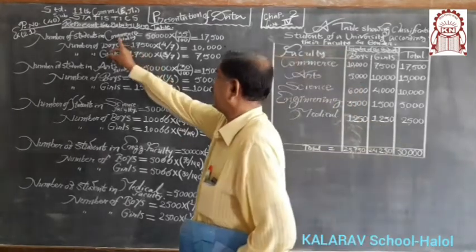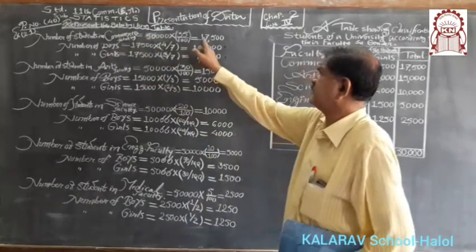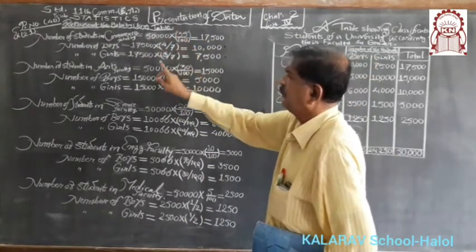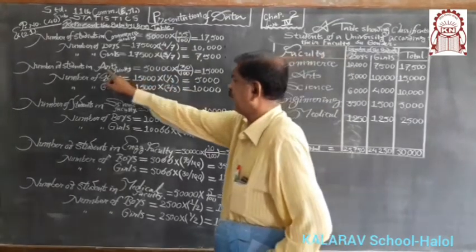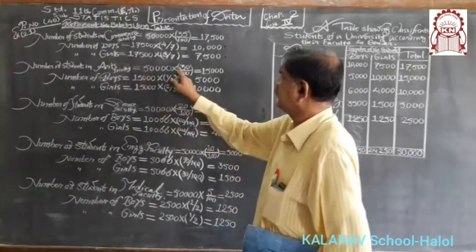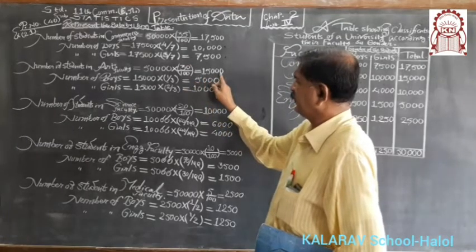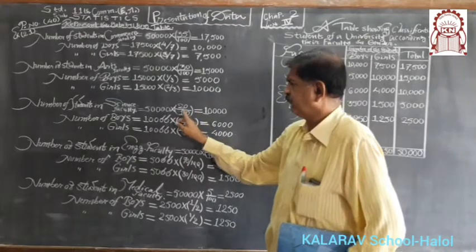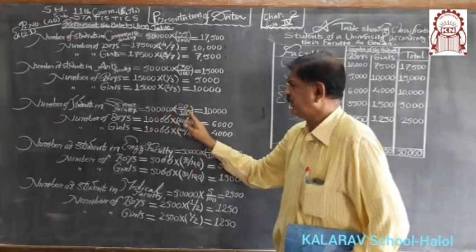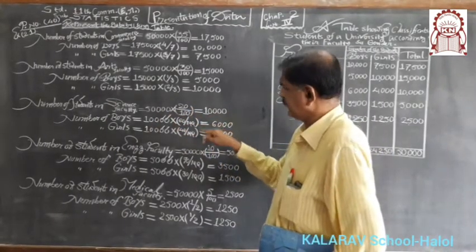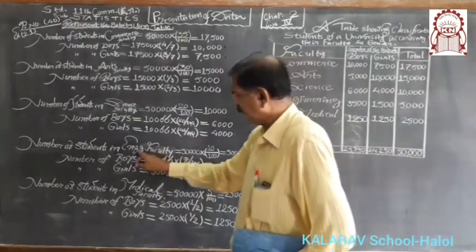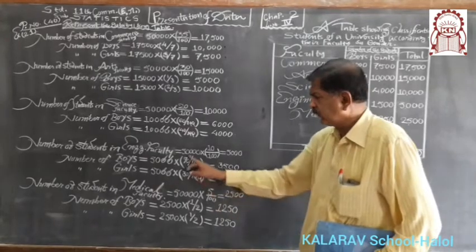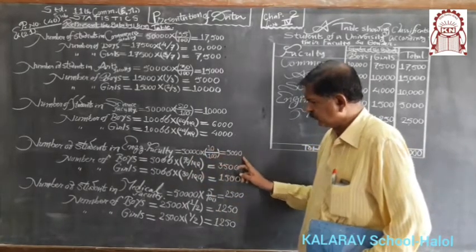In commerce faculty, the number of students is 17,500 — that is 50,000 into 35 upon 100. In arts faculty, 50,000 into 30 upon 100, giving 15,000. In science faculty, 20% means 50,000 into 20 by 100, giving 10,000. In engineering faculty, 10% means 50,000 into 10 upon 100, giving 5,000 students.